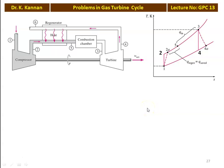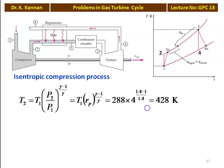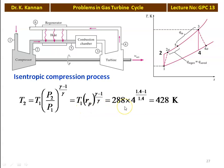This is the temperature-entropy diagram for the gas turbine cycle with regeneration, with compressor and turbine efficiency. We have to calculate the cycle efficiency of the regenerative cycle. For the isentropic compression process, we calculate the temperature T2 at the end of isentropic compression: T2 equal to T1 into (P2/P1) to the power (gamma minus 1)/gamma, which is T1 into Rp to the power (gamma minus 1)/gamma. Substituting numerical values, T1 equal to 288 and pressure ratio equal to 4: 288 into 4 to the power (1.4 minus 1)/1.4 equal to 428 Kelvin.